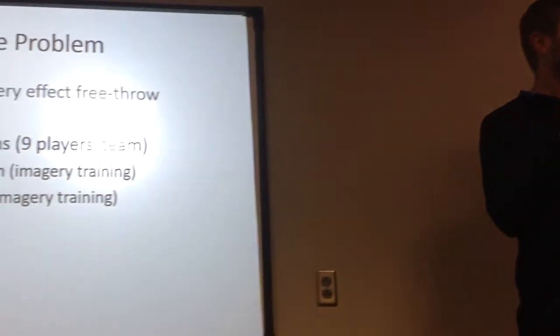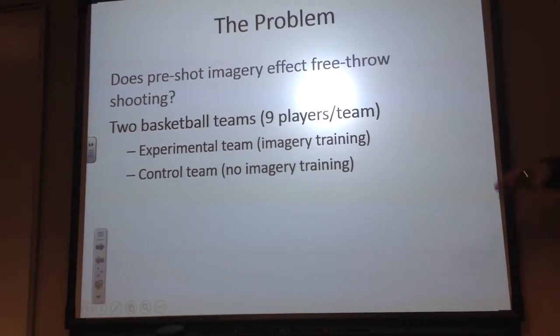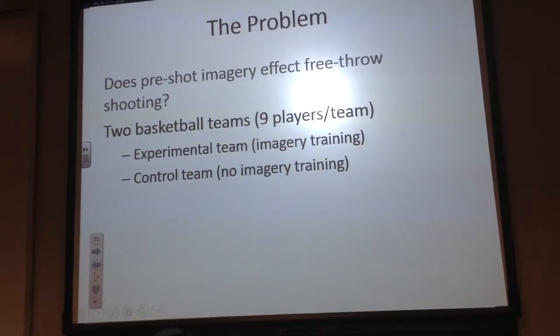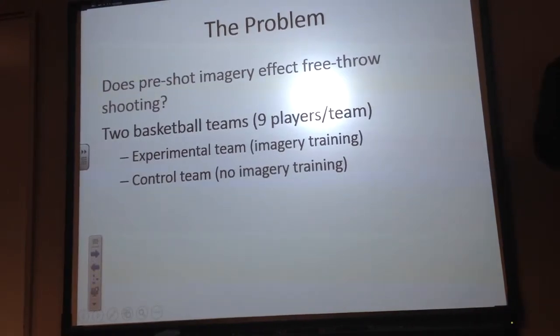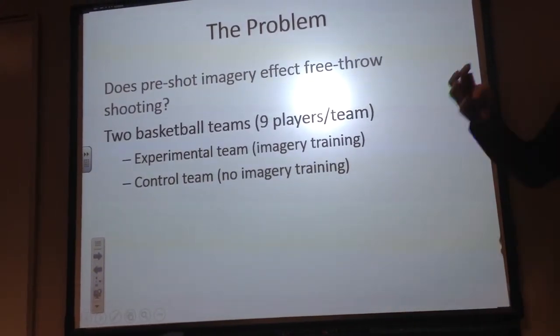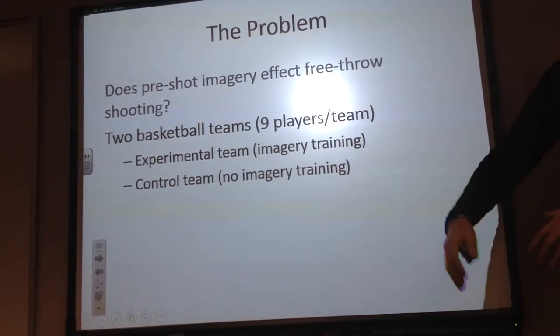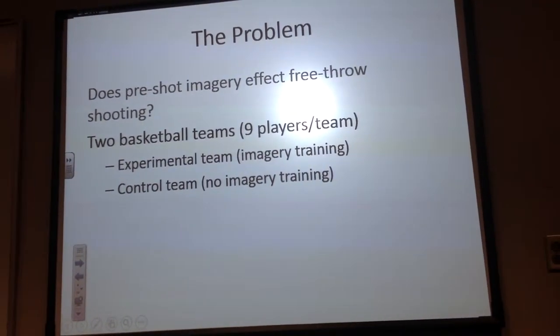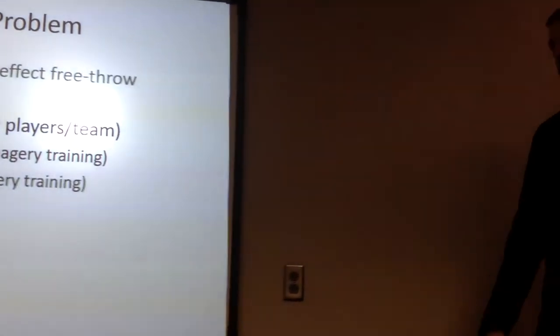So the problem that I'm going to present you with, and what we're going to work through, is if a basketball player, if a pre-shot imagery effect - you don't have to know anything of what that means - affects free throw shooting. So if this sports psychology principle can help somebody actually shoot a free throw and shoot it better than they did before. So the way we would organize this, again, very simple, we're going to have two teams. Each team has got nine players. We're going to have an experimental team that's going to be doing this brand new thing, and a control team that's not going to do anything.